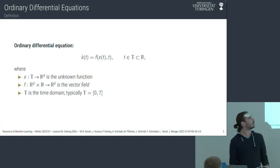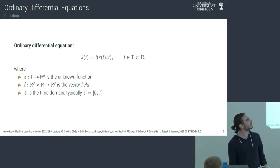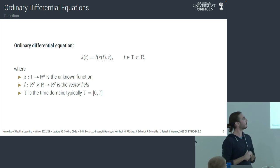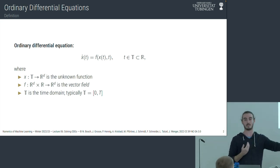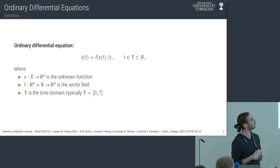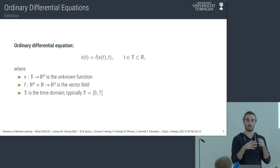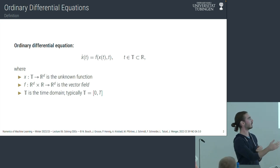Before the examples, let me define an ordinary differential equation. An ODE is: x-dot of t equals f of x(t), t. X is the unknown function — it has a similar meaning as the state from last week; it's a thing that evolves over time. It is a function, so it is continuous. X is defined for all t's in some time domain. I use t and talk about time because x has a one-dimensional input — only a scalar — and evolves along this one dimension.